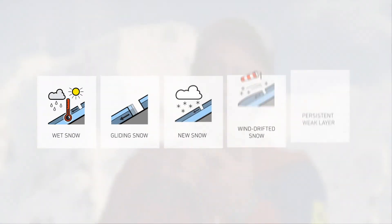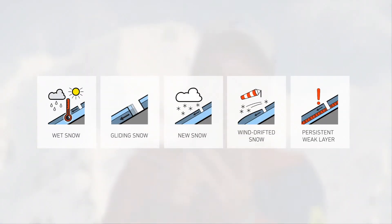For the avalanche warning services, it is always important to indicate what the problem is. That's why the European avalanche warning services all agreed to use five typical pictograms for five avalanche problems. The international avalanche warning services have agreed on five avalanche problems: wet snow, gliding snow, new snow, wind-drifted snow, and persistent weak layers.